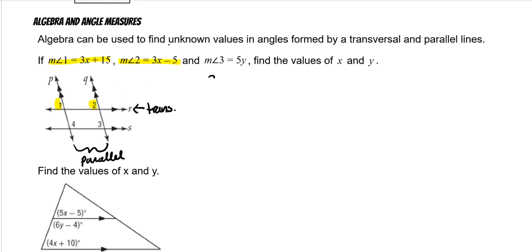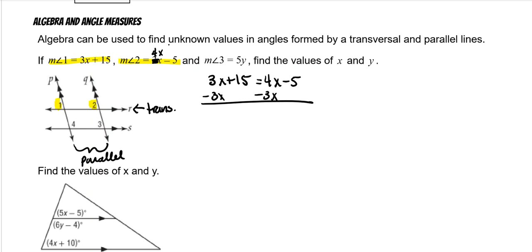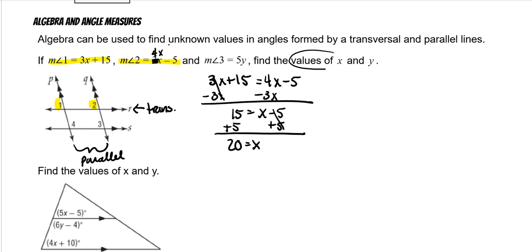So you have 3x + 15, and this should be 4x − 5. So 3x + 15 is equal to 4x − 5. Subtract 3x from both sides: you have 15 is equal to x − 5. Then you add 5 to both sides, and x is 20.